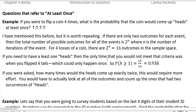If you need to have at least one heads, the only time you would not meet that criteria was when you flip four tails, which could only happen once. So there's one time out of 16 when you wouldn't get what you wanted here. So for heads being greater than or equal to one, which is heads at least one, 15 out of 16 times you would get that. And there'd be only one out of 16 times when you'd get all tails.